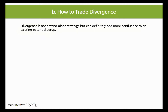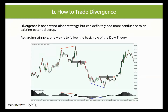Regarding triggers, one way is to follow the basic rule of the Dow Theory. For example, when you spot a divergence, don't enter immediately, but wait for the last swing to be broken. In case of a regular bearish divergence, wait for the last swing low to be broken downward before selling as an extra confirmation, and vice versa in case of a regular bullish divergence — wait for price to break above the last swing high before buying.